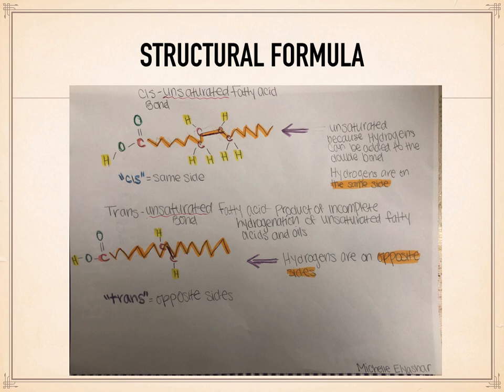On the top structure, we have a cis-unsaturated fatty acid bond. It is unsaturated because hydrogens can be added to the double bond, and in the cis structural formula, the hydrogens are on the same side. If you take a look at the bottom structure, we have a trans-unsaturated fatty acid bond. This is the product of incomplete hydrogenation of unsaturated fatty acids and oils. In this structural formula, the hydrogens are on opposite sides.